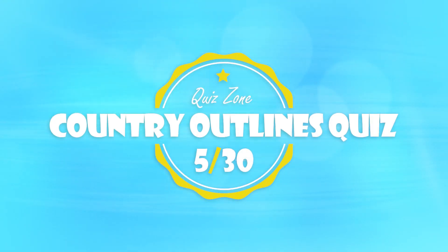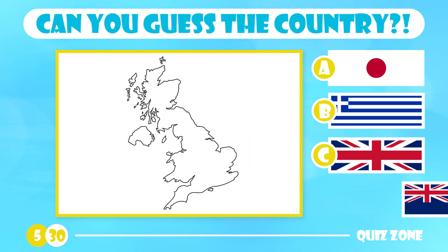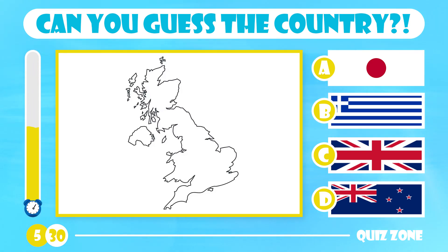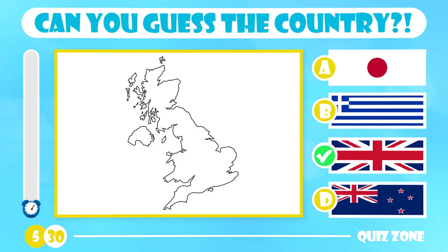Can you name the country based on the outline? Is it Japan, Greece, the UK or New Zealand? The answer is the United Kingdom. Commonly called the UK, it is a country composed of Wales, England, Scotland and Northern Ireland. With 65.1 million people, it is the world's 21st most populated country.